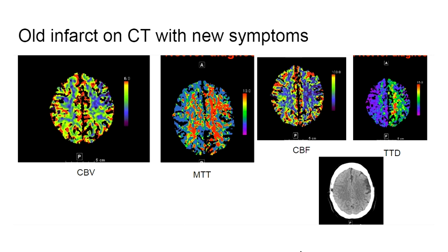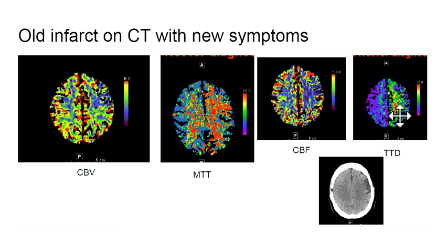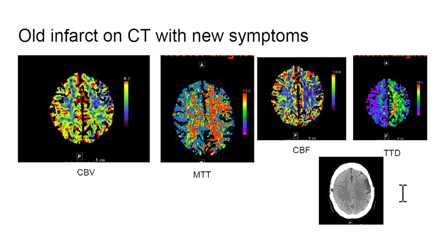This patient came into the ER with new symptoms but had an old infarct on non-contrast head CT. The first thing to do is look at all the sequences and find the abnormality — there's a big abnormality on the time to drain. Then analyze by comparing CBV to MTT: there's a large MTT defect and a relatively small CBV defect, corresponding to the CT findings. You would say there's a relatively small core infarct with a large amount of surrounding potentially reversible ischemia throughout the left hemisphere. The CTA showed a left internal carotid occlusion.